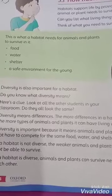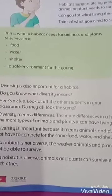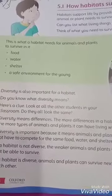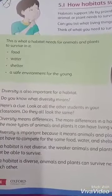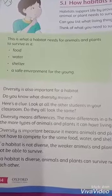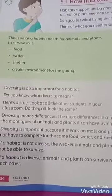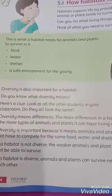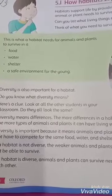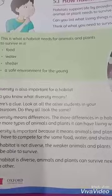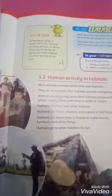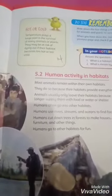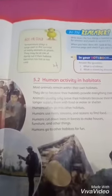But if you have a habitat with only one type of species — species means kind — only one kind of animal or plant, then what will happen? They will compete with one another, and the result will be that stronger animals will be able to survive and the weaker ones will die out.